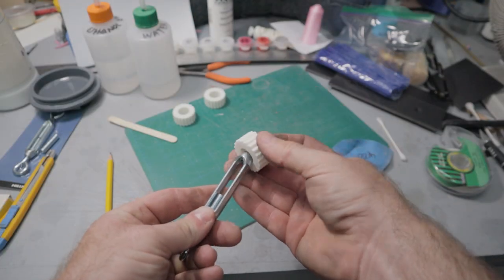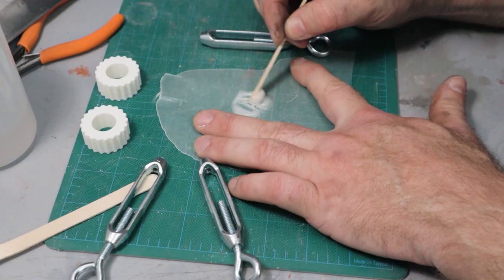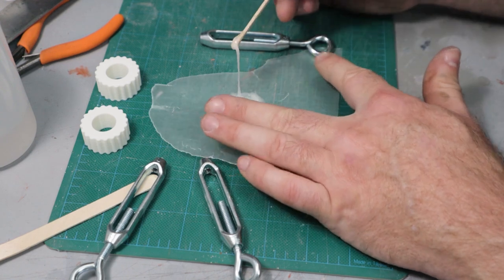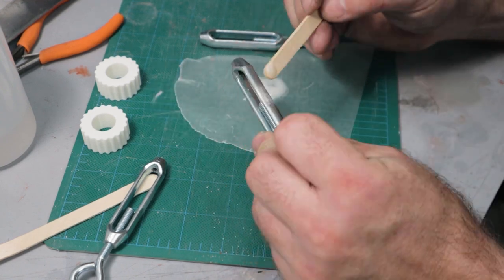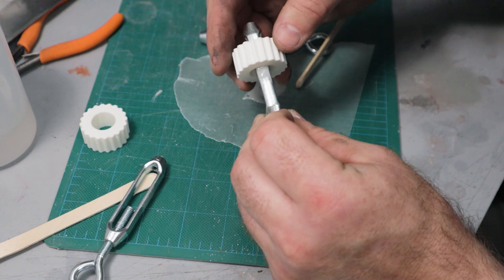To make it easier to turn the turnbuckles, I 3D printed a little slide-on knob which I epoxy into place. I'll put this file on my Thingiverse and put a link in the description.